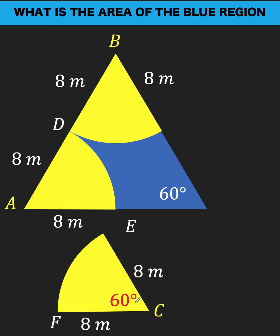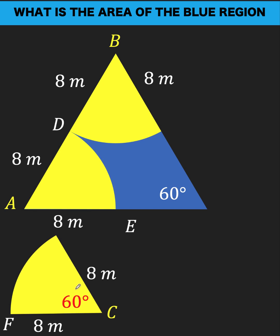Then to find out the area of this yellow sector, we are going to get 60 out of 360 of the area of a circle with a radius of 8 meters. So that circle has an area of π times 8 squared,